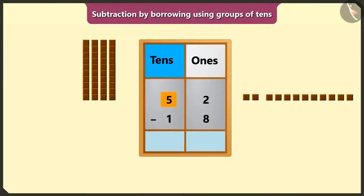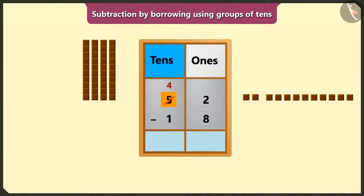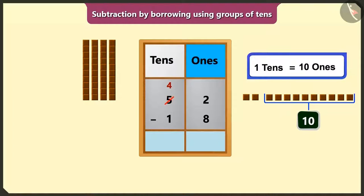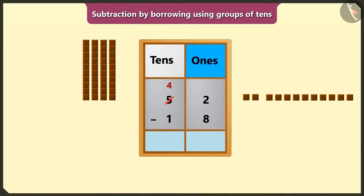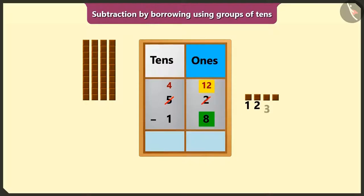Borrowing 1 ten from the 5 tens in the place of tens means subtracting 1 ten from 5 tens, which makes it 4 tens. So 1 ten will be less in the place of tens. Now in the box of ones, 1 borrowed ten equals 10 ones. It will be 2 ones plus 10 ones, meaning 12 ones in the box of ones. Now if we subtract 8 ones from 12 ones, we will have 4 left. So we will write 4 in the place of ones.